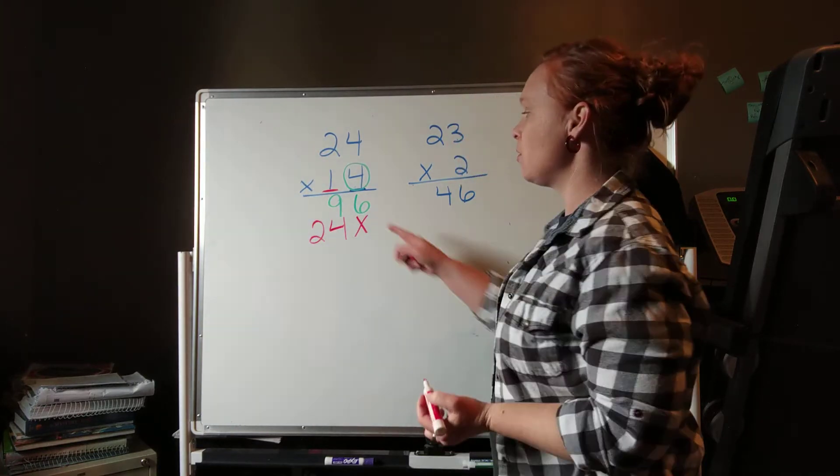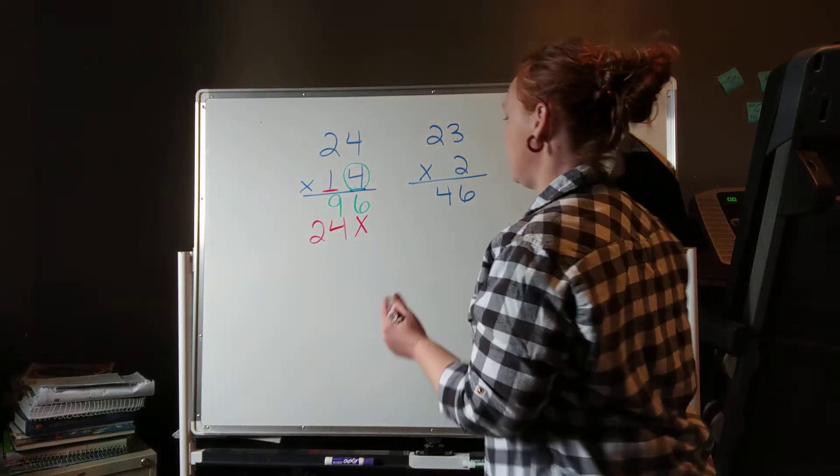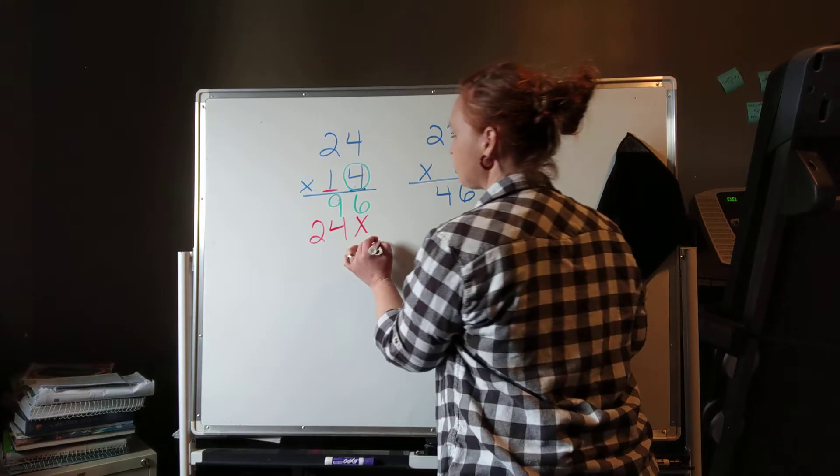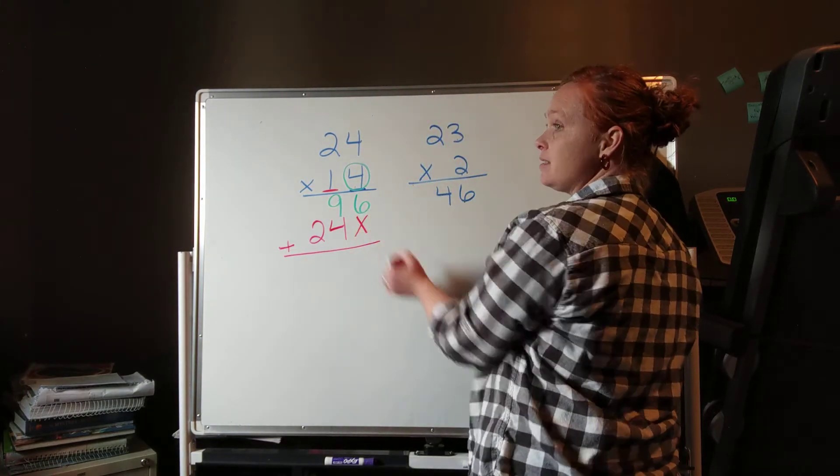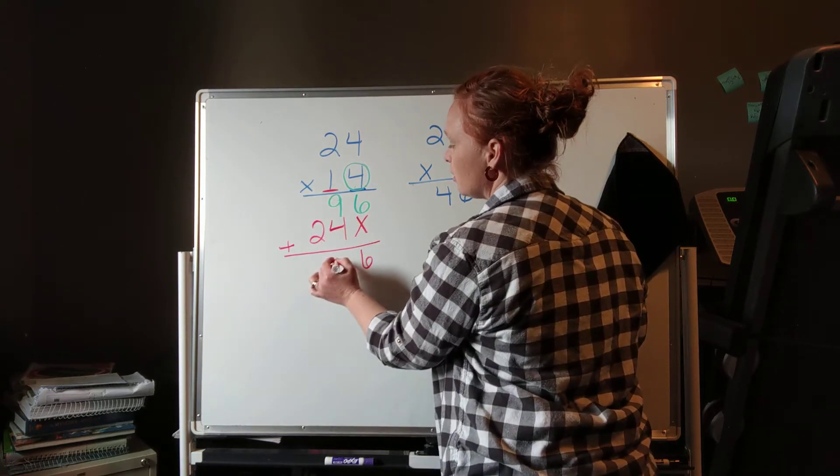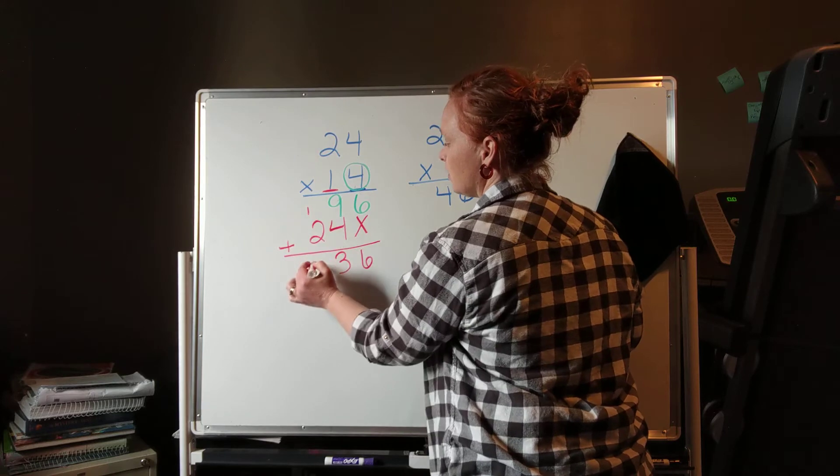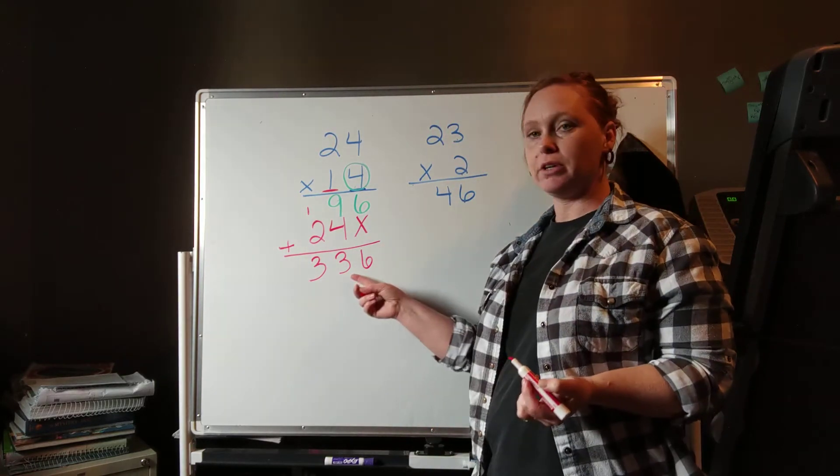Now remember it's so important the way that we line our numbers up, so when we get ready to add them together to get our final answer, it's clear. So I'm going to go ahead and add the bottom: 6 plus nothing is 6, 9 plus 4 is 13, carry the 1, 3. So our answer is 336.